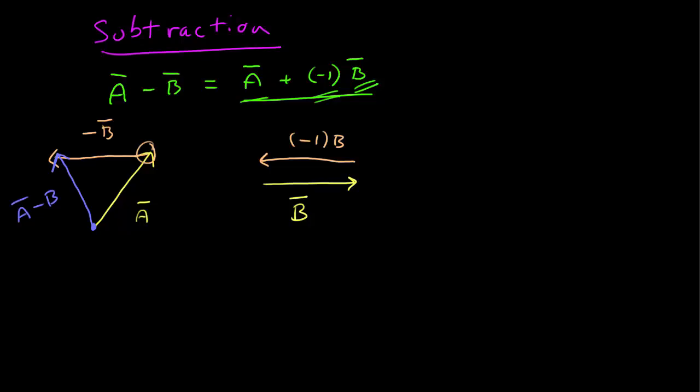Just for another example, we can do b minus a by the same procedure. We have b, which I'll redo here, and now we need negative a. Negative a is going to go in that direction, so negative a, b plus negative 1 times a, a in the other direction.